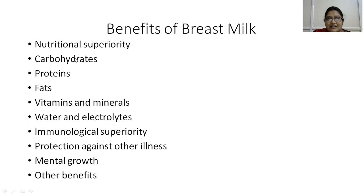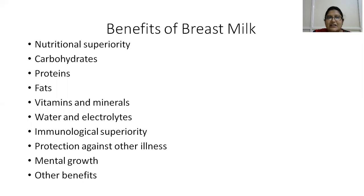Proteins constitute 0.9 to 1.1 grams per deciliter. Among proteins, 60% is constituted by lactalbumin and lactoglobulin. Cysteine and taurine are essential amino acids present in breast milk, necessary for neuromodulation and neurotransmission.